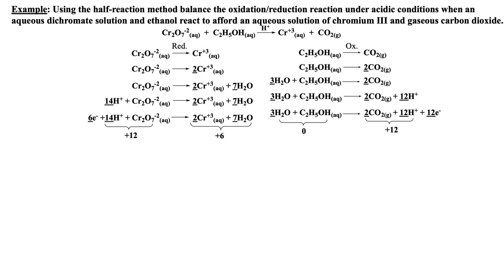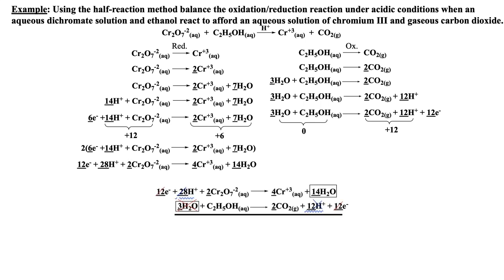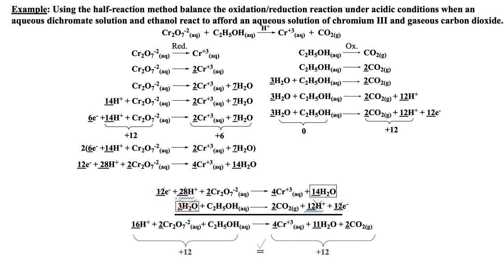Before the two half-reactions can be added, we need to ensure that electrons will cancel, which requires a distribution of two to the reduction half-reaction. Now the two half-reactions can be added and the twelve electrons will cancel out. In addition, numbers of water molecules and protons can simplify prior to adding both half-reactions. Checking charges and numbers of atoms on both sides of the equation indicate the redox reaction is balanced.